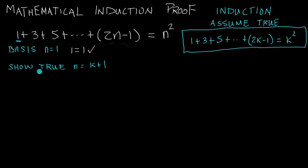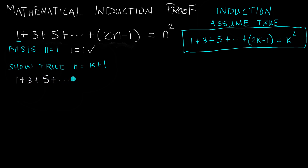So now we're going to show that this statement is true for n equals k plus 1, based off the assumption we made in our induction step. We write 1 plus 3 plus 5, going all the way up to the n equals k term, so 2 times k, placing k where n is, minus 1.